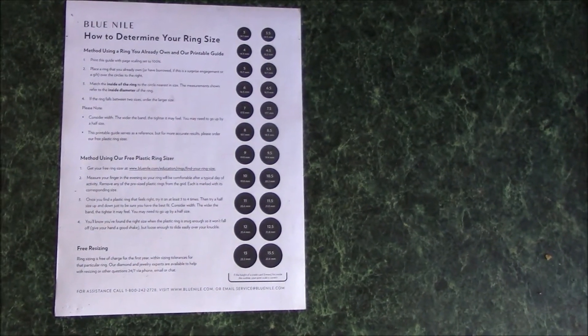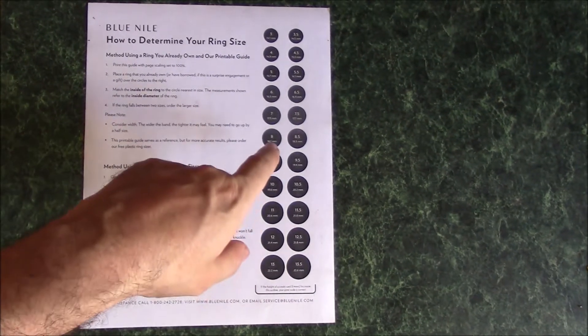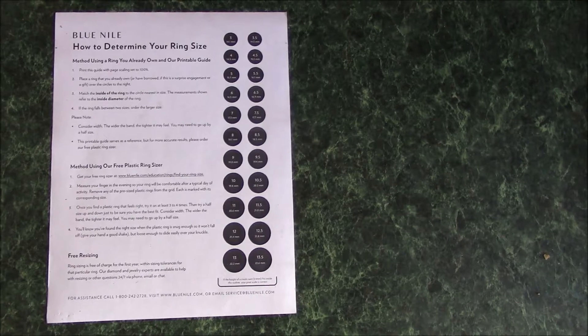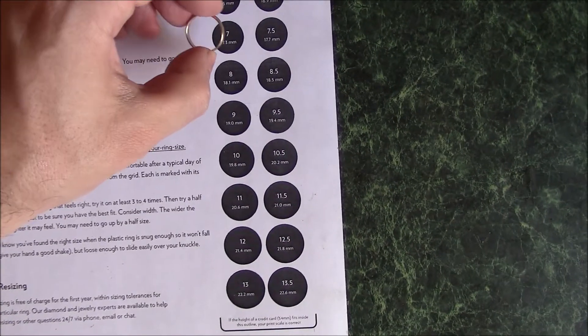Now here's the page. It's printed out. All you have to do is take the ring and place it on the circle that corresponds to the size. So here's a ring right here. So I'm going to put it on 7.